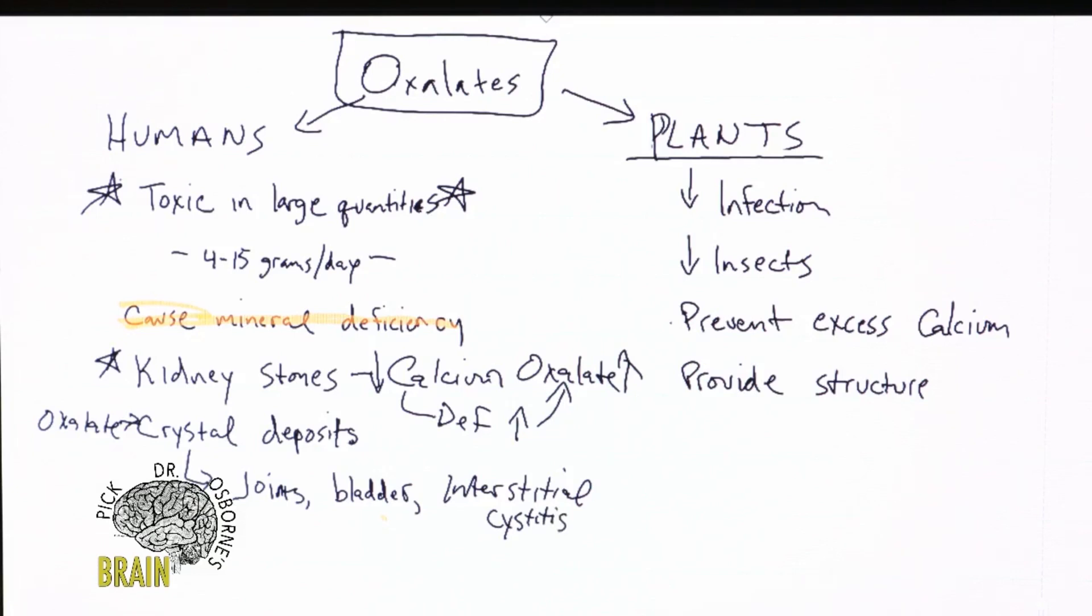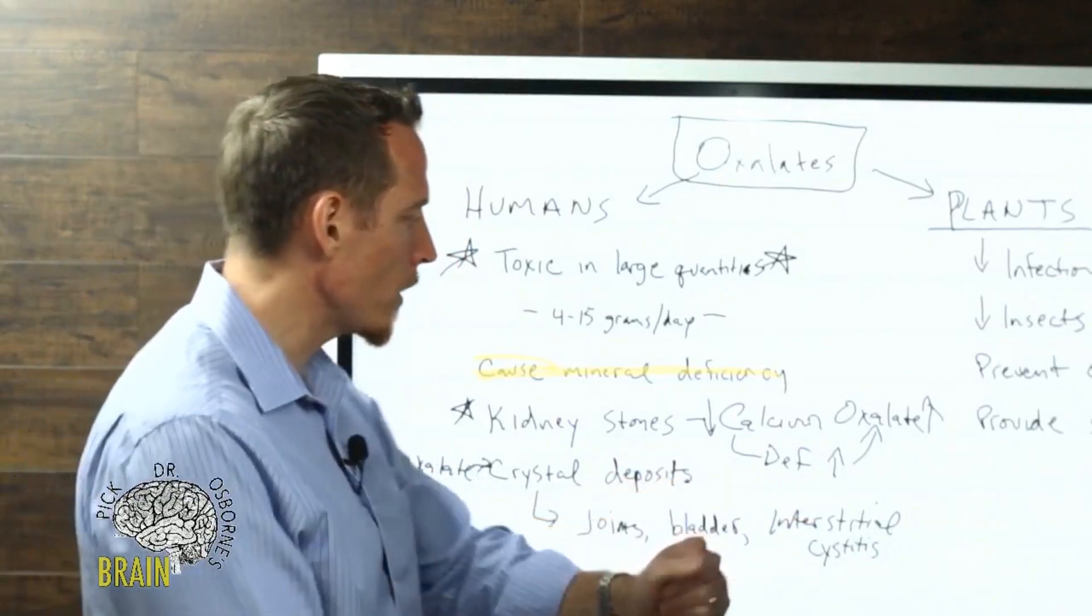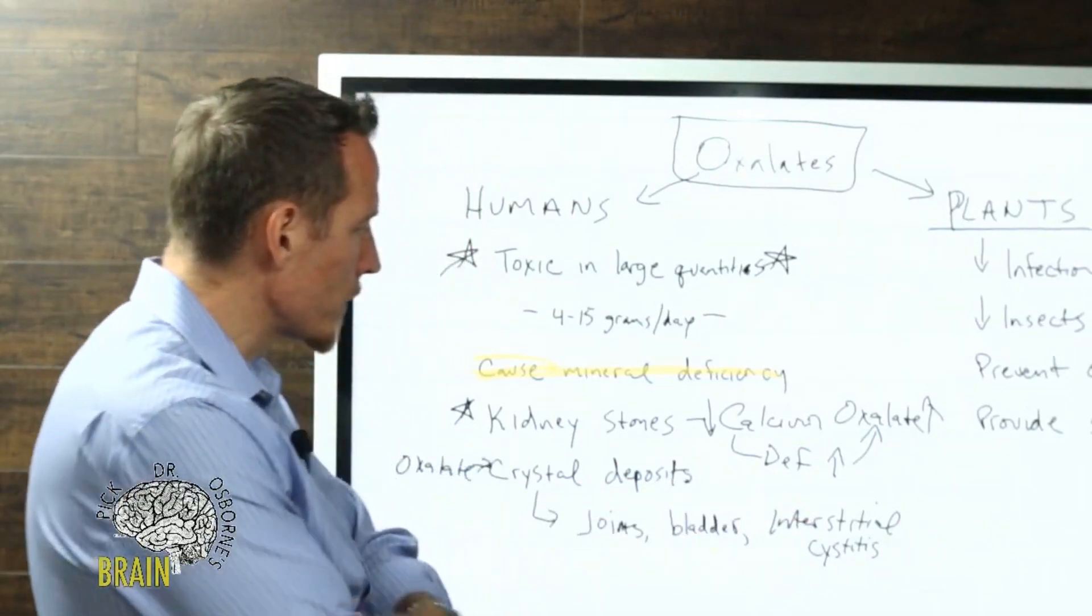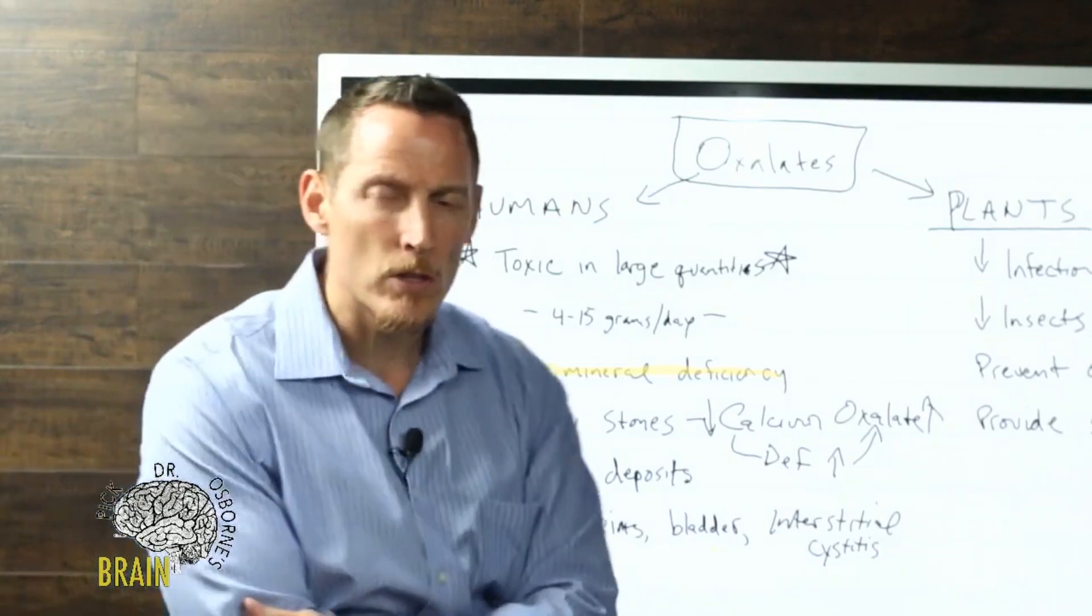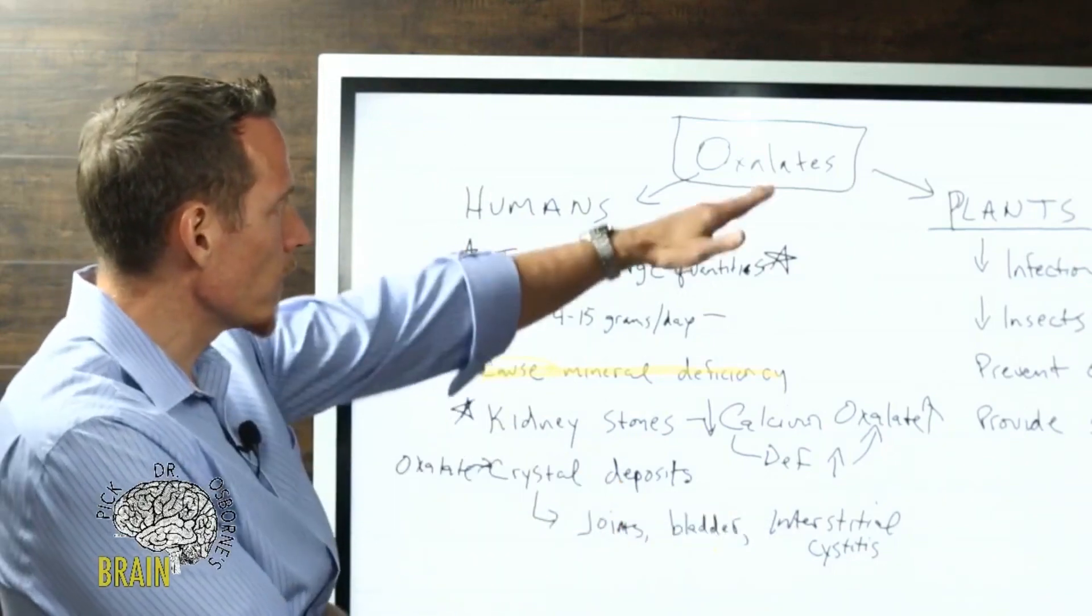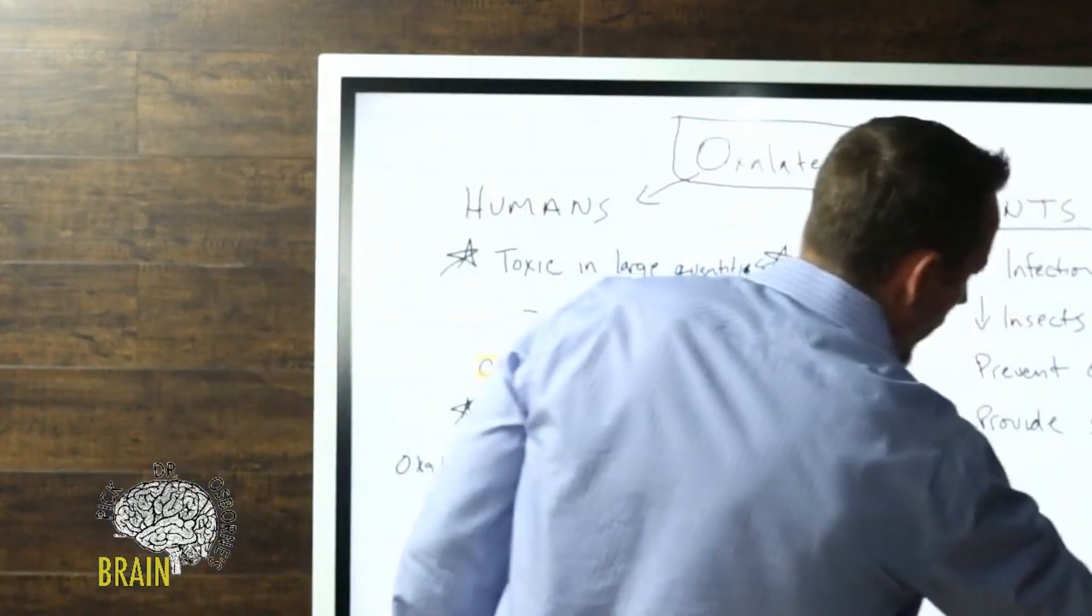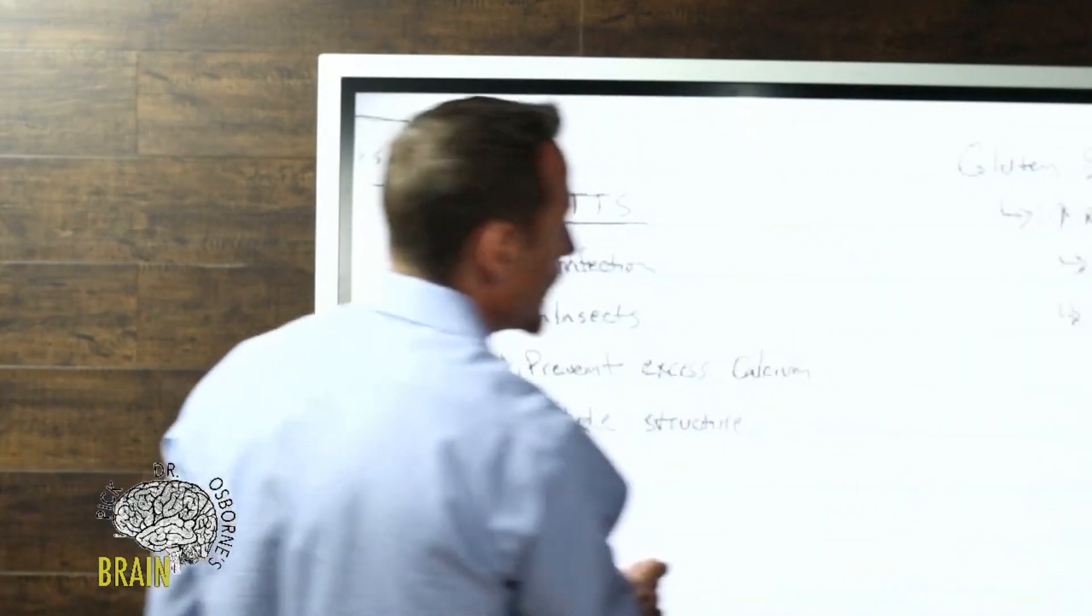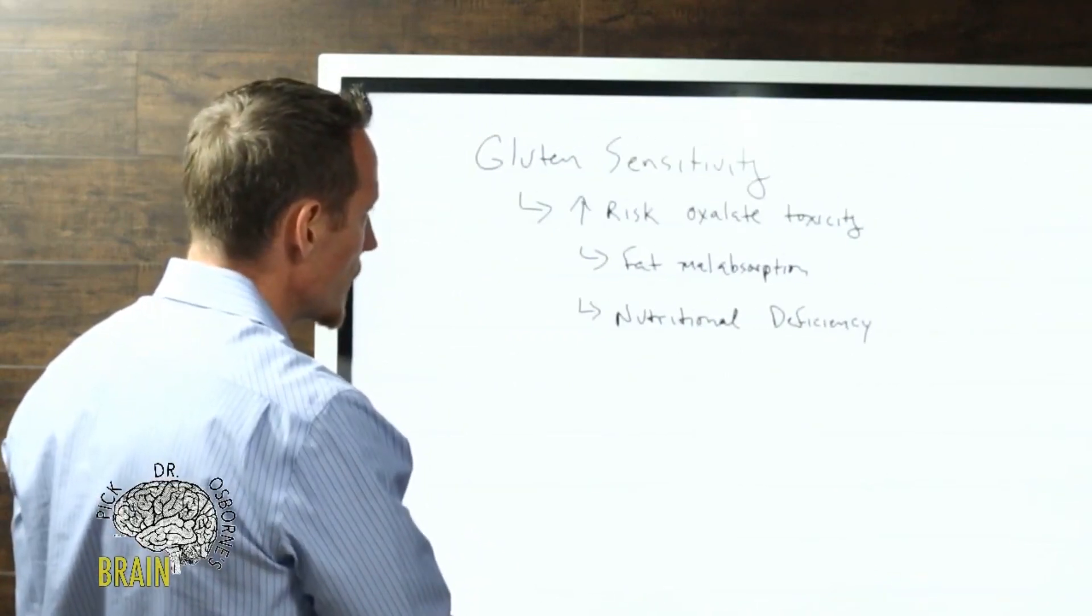This has actually been linked to oxalate toxicity or oxalate formation, which can create extreme bladder pain. Women are more susceptible to this particular manifestation. If you suffer with interstitial cystitis or IC, you might just consider that oxalate toxicity is part of that problem. Let's talk a little bit about gluten sensitivity.